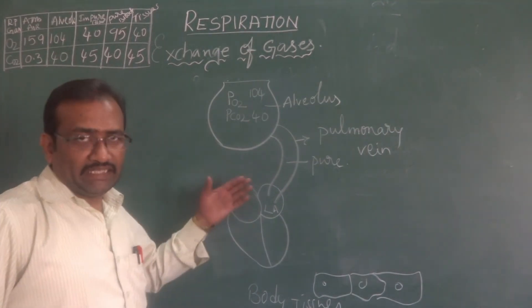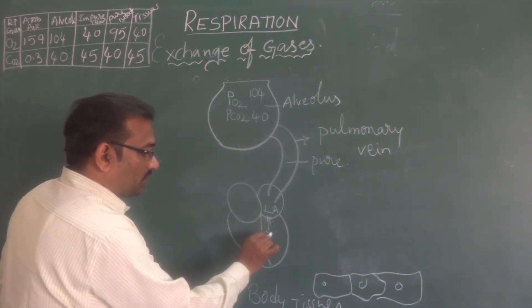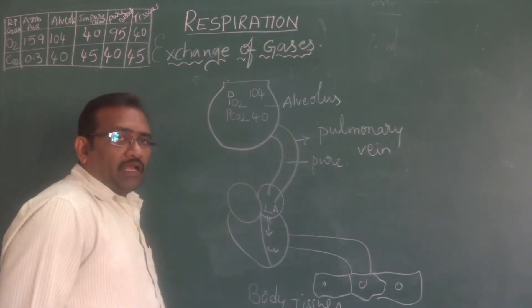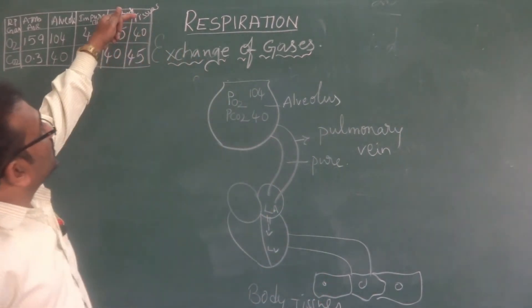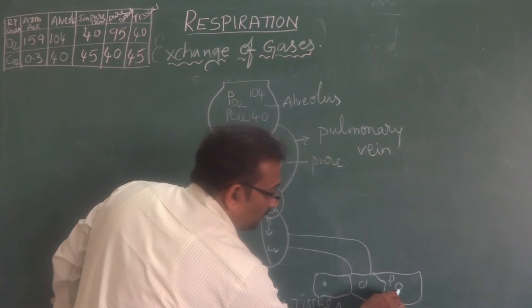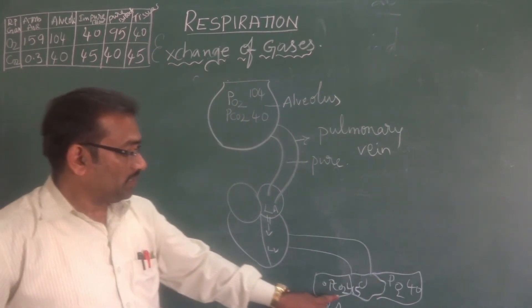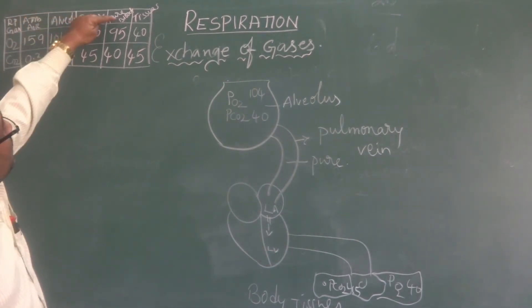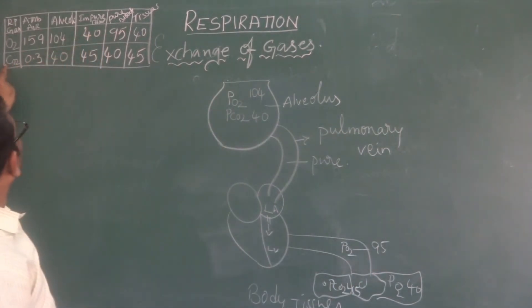The target organ is the tissues. In the tissues, the partial pressure values are PO2 is 40 and PCO2 is 45. The pure blood arriving at the tissues contains PO2 of 95 and PCO2 of 40.